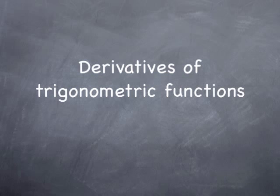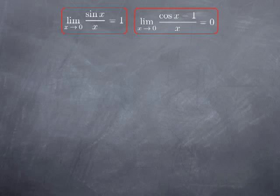Now we're going to take a look at the derivatives of standard trigonometric functions. In the previous video, we established that the limit of sin x over x at 0 is 1, and that the limit at 0 of cos x minus 1 over x is 0.